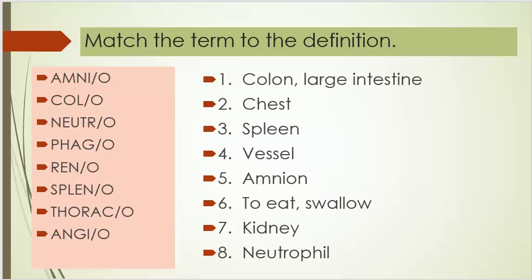The terms are: amnio, colo, neutro, phago, reno, splenno, thurasso, and angio. Number one, colon or large intestine. Number two, chest. Number three, spleen. Number four, vessel. Number five, amnion. Number six, to eat or swallow. Number seven, kidney. Number eight, neutrophil.